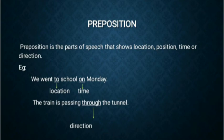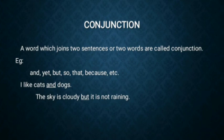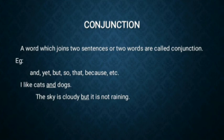Then comes the seventh part of speech, which is conjunction. A word which joins two sentences or two words is called a conjunction. For example: but, so, that, because, and so on. 'I like cats and dogs' — here and is used to join the words cats and dogs. Another example: 'The sky is cloudy, but it is not raining' — here the word but is used to join two sentences, so it is a conjunction.